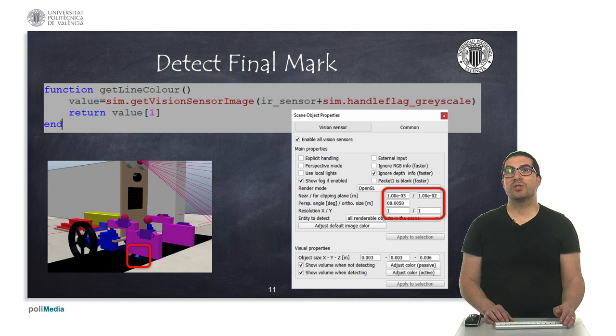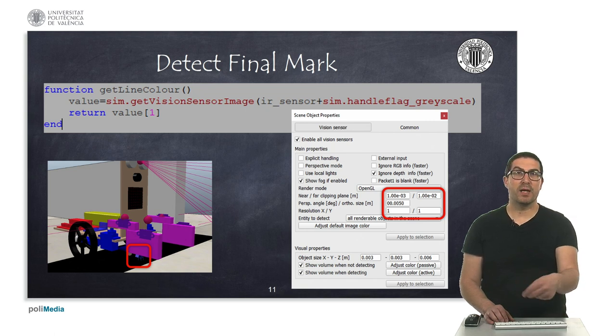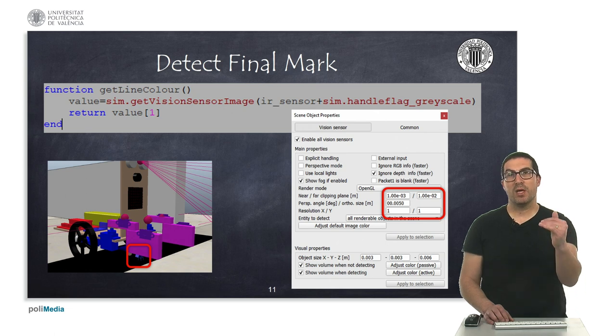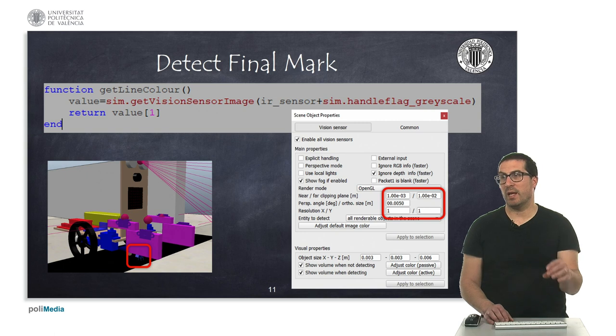Here I show you the get line color function that you can use to return the value of the grayscale value of the ground we are detecting with the single pixel that this sensor has. This value is approximately 0.1 when detecting a black line. So, if you detect something below that threshold, then it means that you have detected the line.